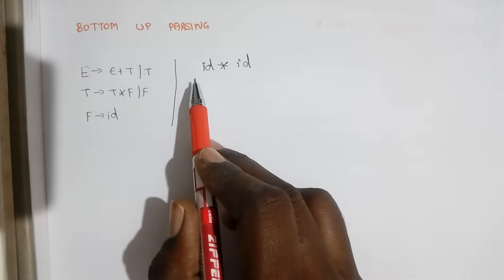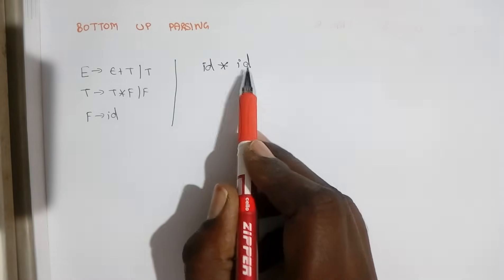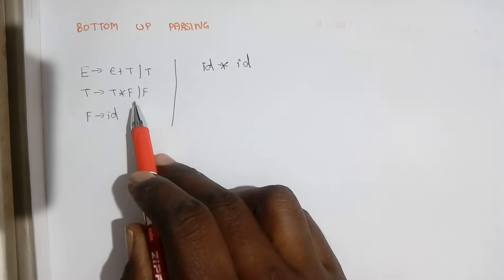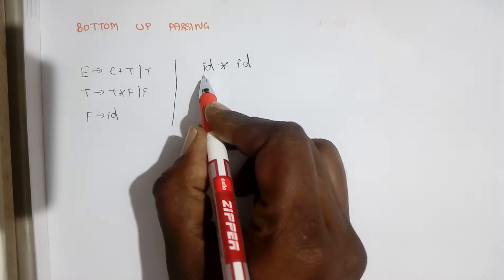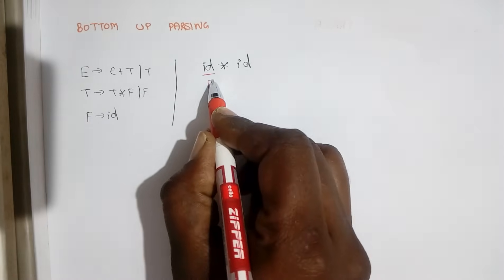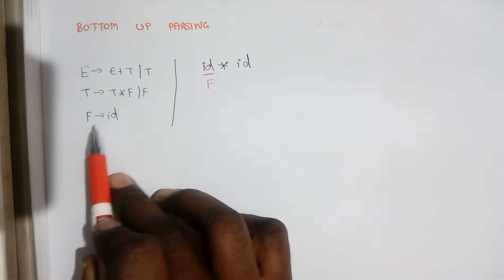For example, when you consider an input like id star id, this input belongs to this grammar. So first, this id can be replaced with F. Since we have a production F tends to id,